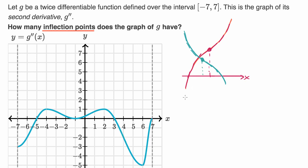In other videos we go into more of the intuition of how to think about the first and second derivatives at an inflection point. But the big picture, at least for this worked example, is to realize: when you're looking at the second derivative, you have an inflection point where the second derivative crosses the x-axis. It's not enough to just touch the x-axis — you must cross the x-axis.